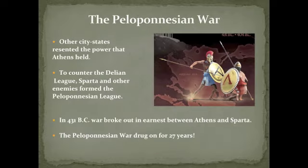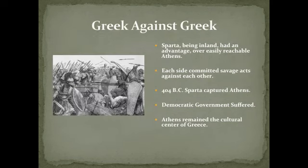The other city-states resented the power that Athens held, and to counter the Delian League, Sparta and other enemies formed the Peloponnesian League. The Peloponnesians supported oligarchy in contrast to the democracy of the Athenians. In about 431 BC, war broke out in earnest between Athens and Sparta and soon engulfed all of Greece. The Peloponnesian War drove on for 27 years. Sparta invaded, and Pericles allowed the people from the country to move inside the city walls of Athens for safety. In the end, this was a mistake, because overcrowding soon led to disease, and a terrible plague killed a third of the population, including Pericles himself.